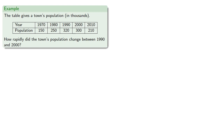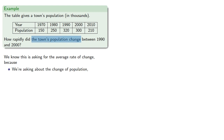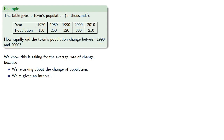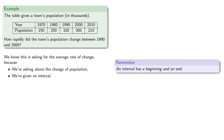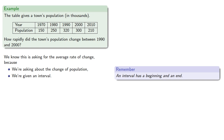For example, suppose we have a table giving a town's population, and we want to know how rapidly the town's population changed between 1990 and 2000. We know this is asking for an average rate of change because we're asking about a change in population, and we're given an interval, in this case between 1990 and 2000. It's useful to keep in mind that an interval has a beginning and an end.